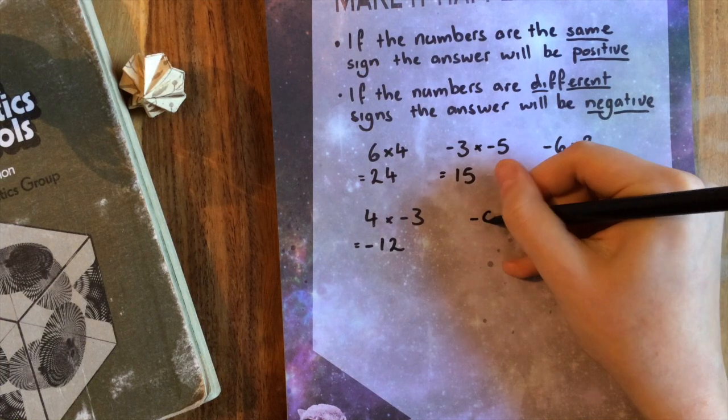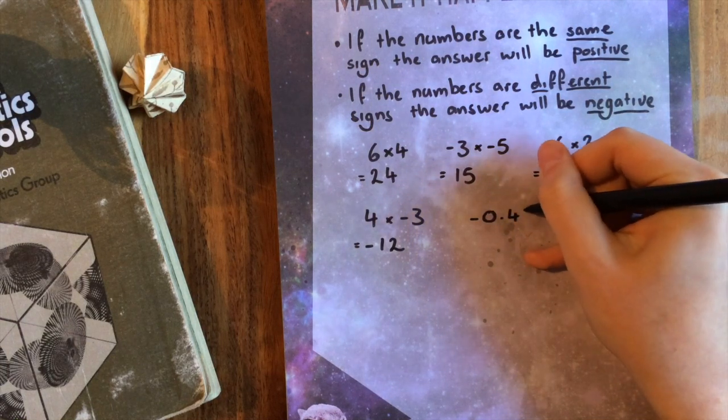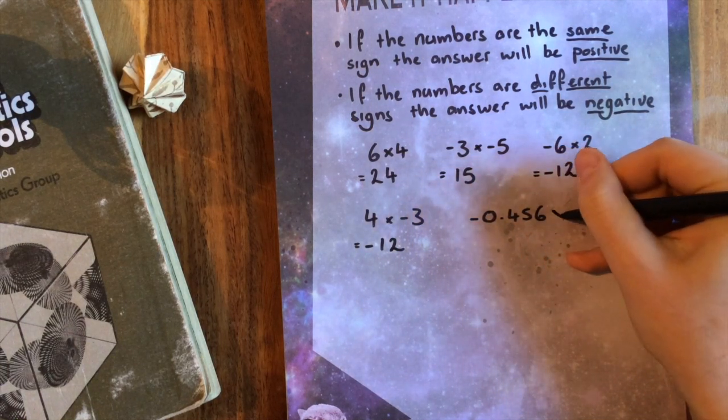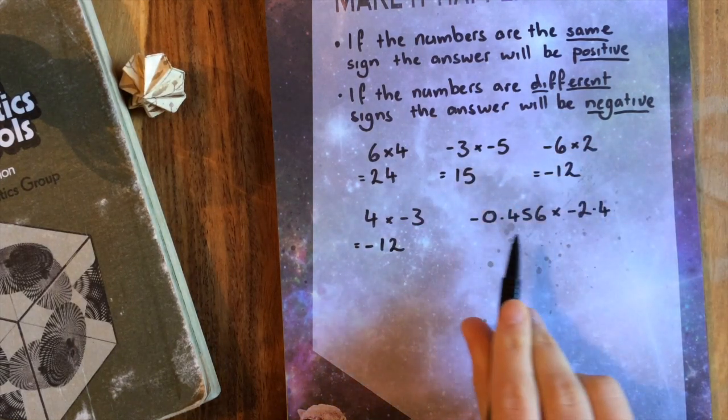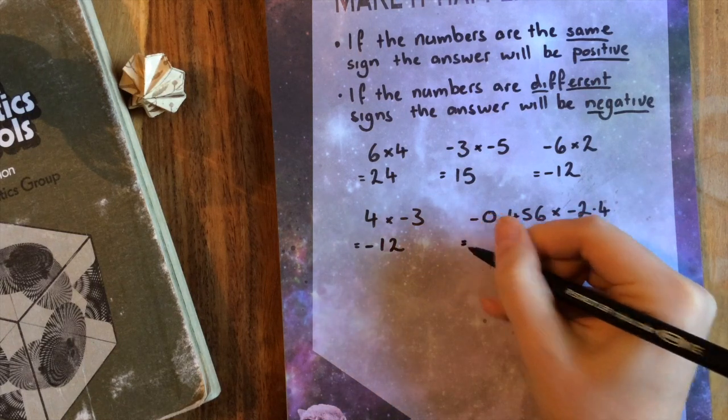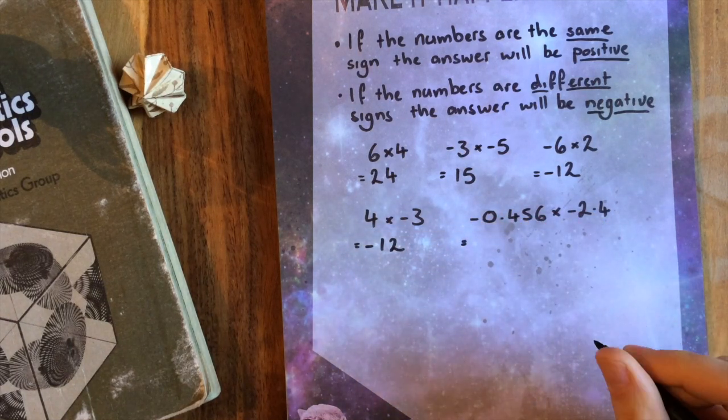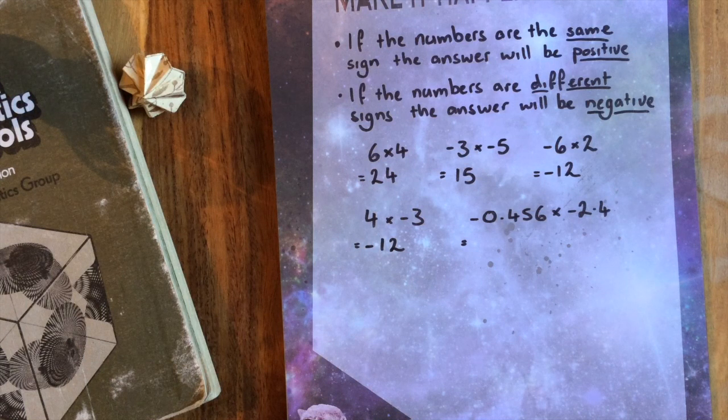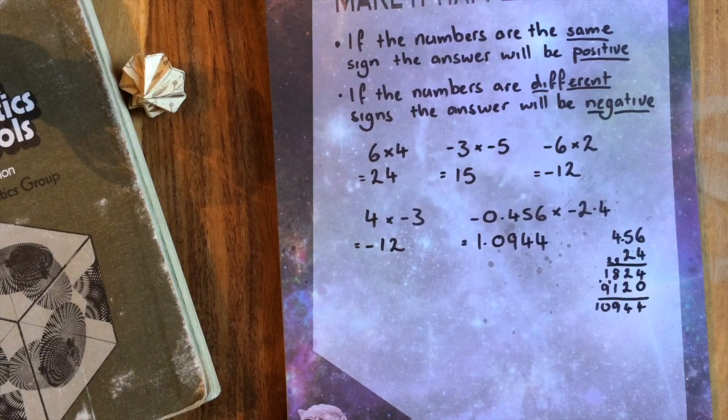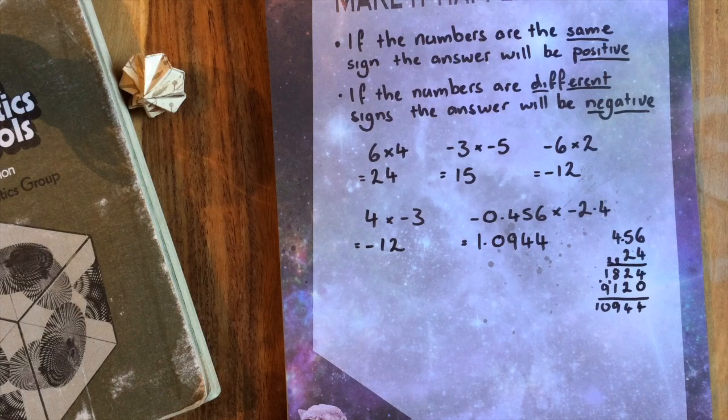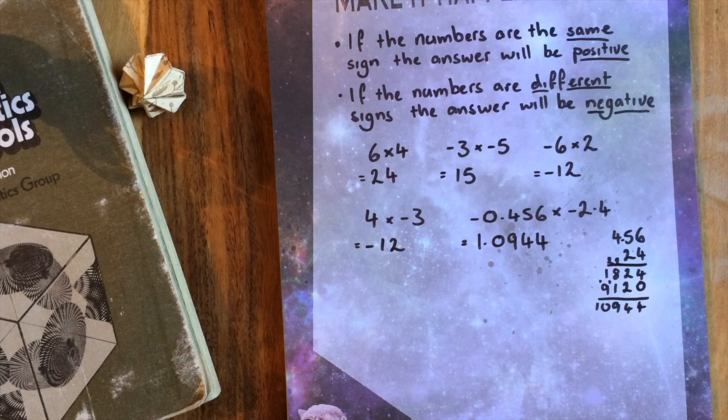For example, if I have negative 0.456 times negative 2.4, I have no idea what the number part of this is, but I know that the answer will be positive. I just realized I'm using my phone to film this, so I can't use my phone as a calculator. Give me a second. Okay, the answer is 1.0944, I hope. But the point is, I knew it was going to be positive before I had to do all of the number part.